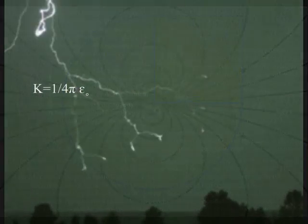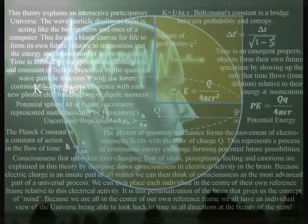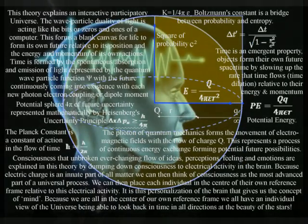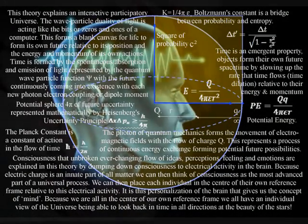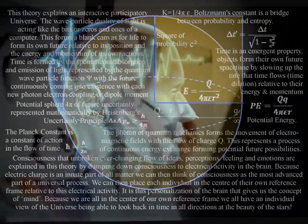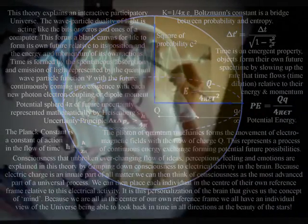In this theory, electrical potential and the individual's future potential are the same within their own reference frame. The most advanced part of this universal process is in the form of electrical activity in the brain, being able to comprehend and measure this process as the flow of time with a past and uncertain future.